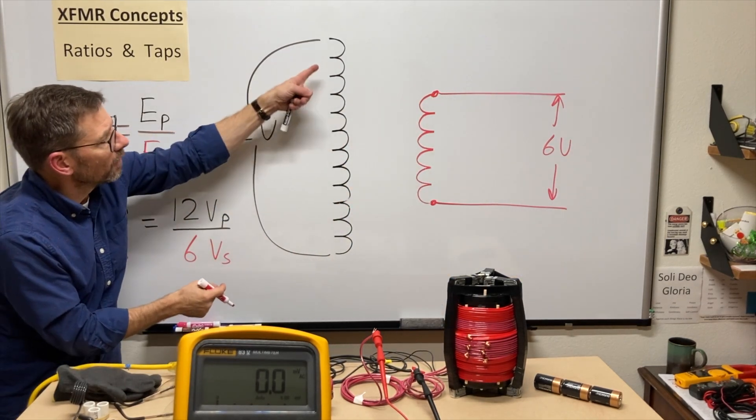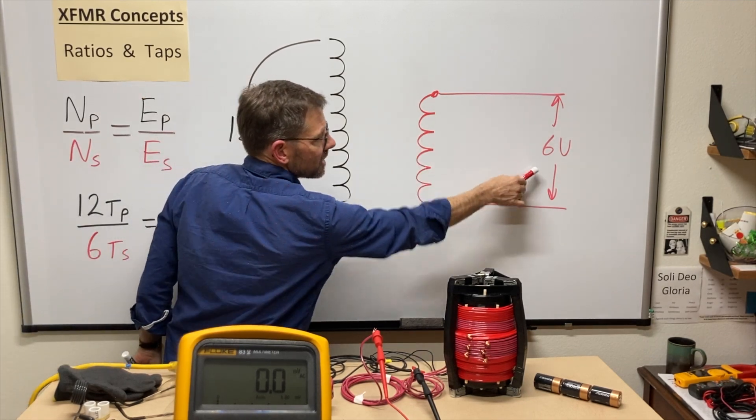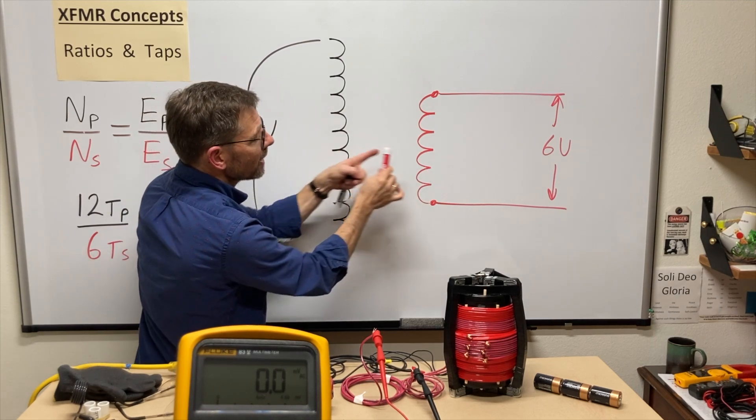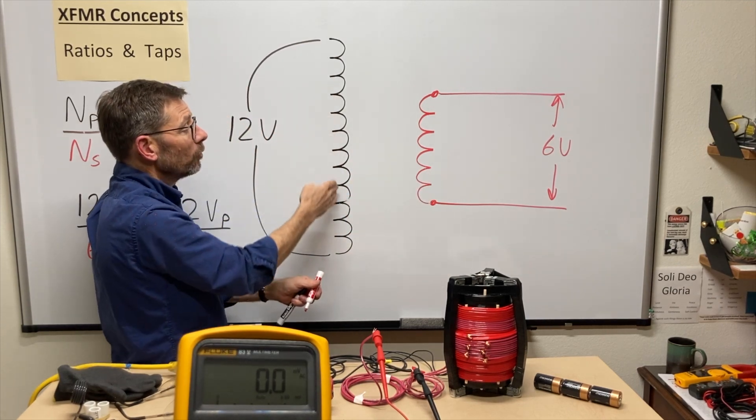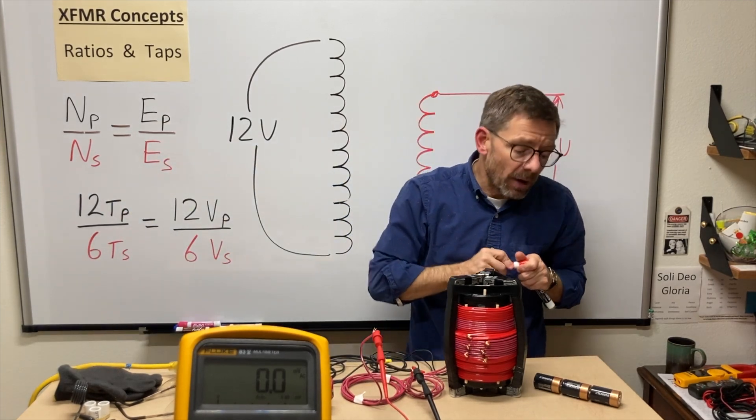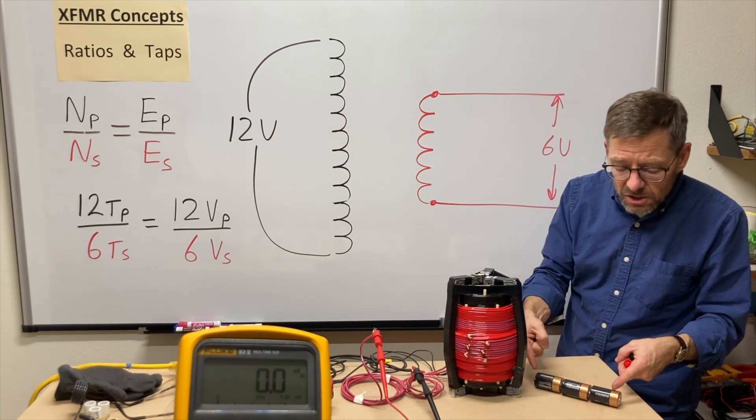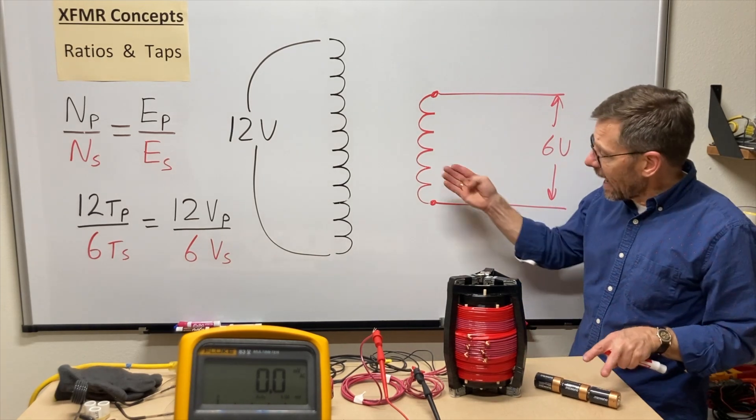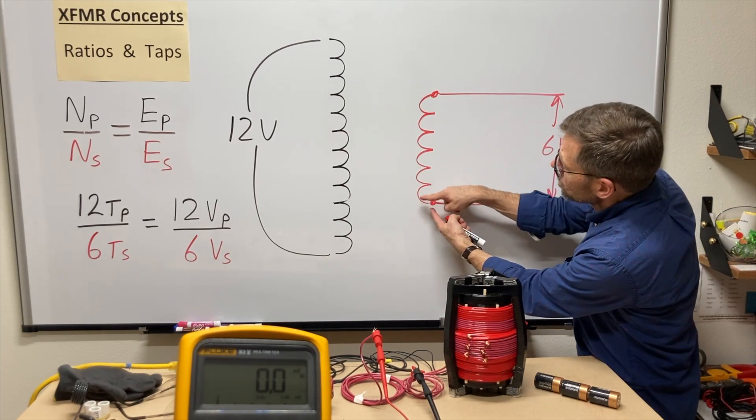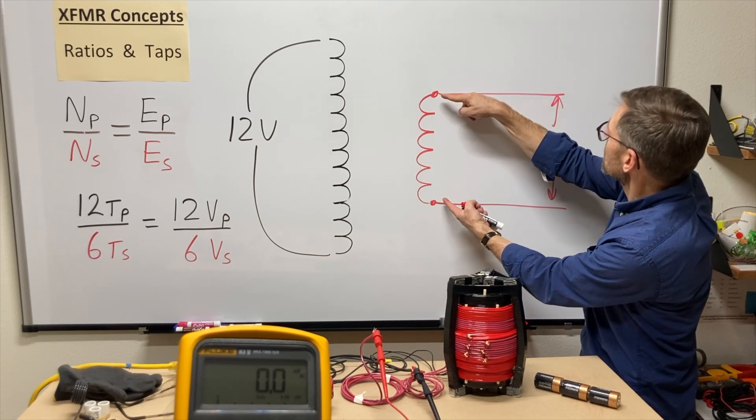Twelve volts is one volt per turn. And over here, six turns, six volts, one volt per turn. This is inducing the same volts per turn into the secondary as I have on the primary. And just like I have batteries here, in series, the voltage adds, DC, AC, where the principal stands, in series, this one volt plus this volt, this volt, this volt, adds up to six volts.